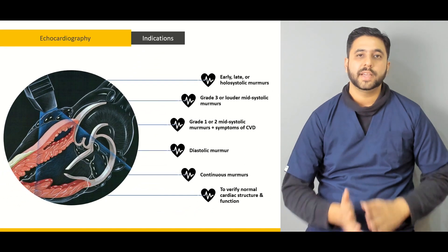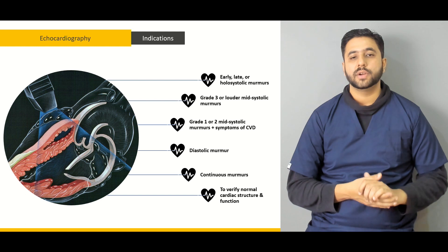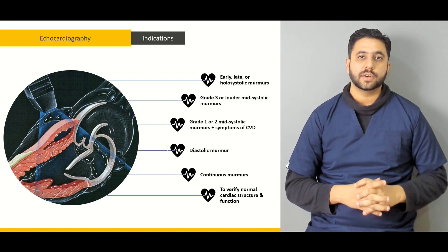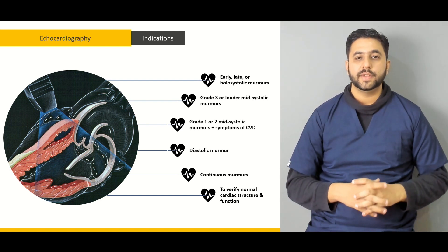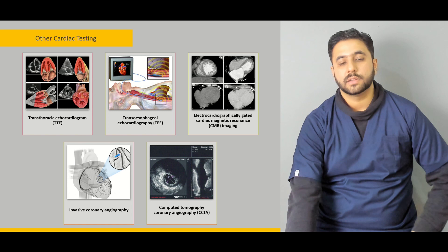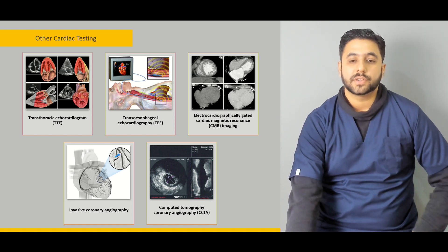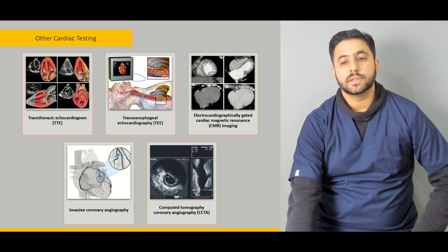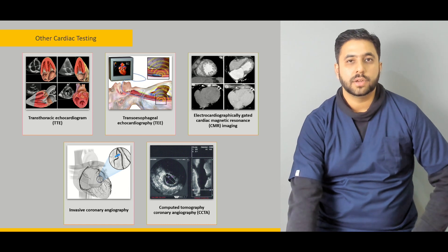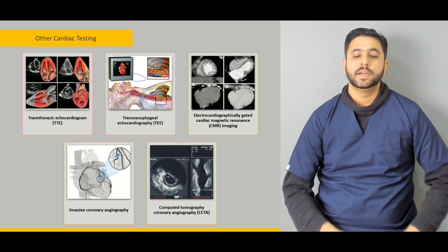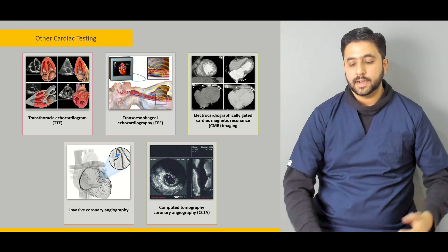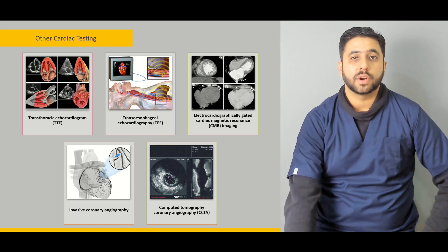After we have completed the clinical examination discussion, we are going to look at the various diagnostic modalities involved in definitively diagnosing our patient. We are going to look at echocardiography — what are the various indications and types of echocardiography: the transthoracic echocardiogram, the transesophageal echocardiogram, and in certain patients, magnetic resonance imaging of the heart. In patients where we suspect coronary pathology or ischemic heart disease, we can do an invasive procedure like a coronary angiography or CT angiography to look at the coronaries and further details of what is wrong with the heart.